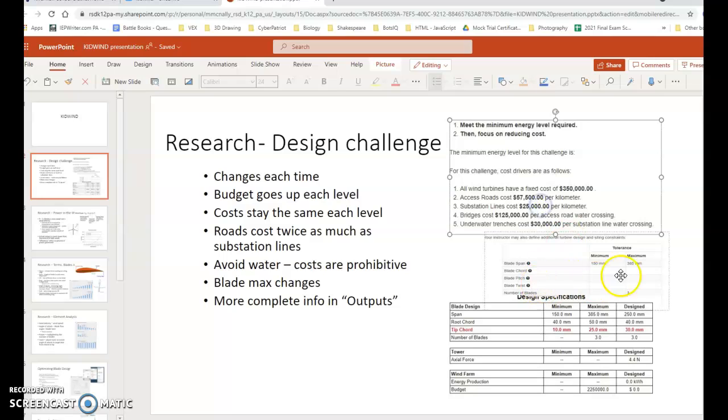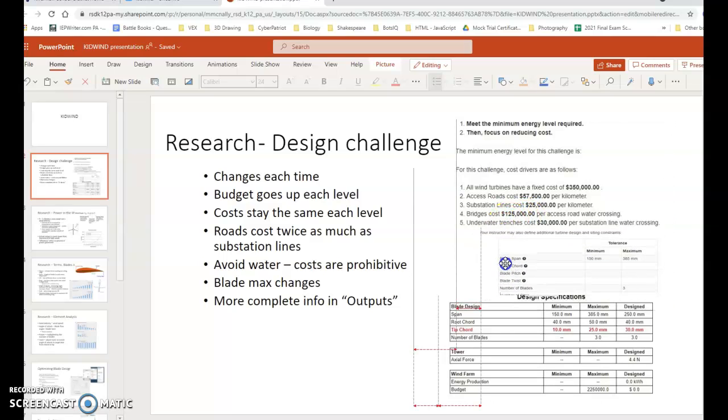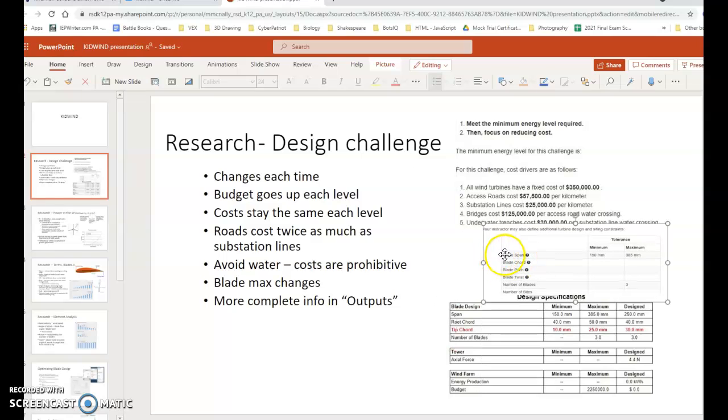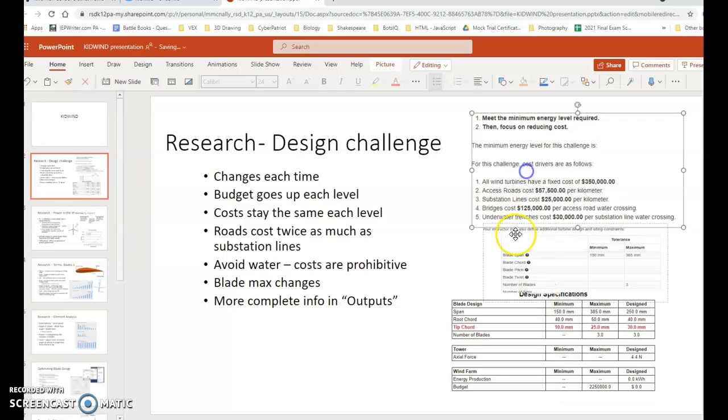Then talk about your pictures. So this is an example over here, this is level two. So it costs $350,000 to make a windmill. You can see access roads are more than twice as much as a substation line. Bridges and underwater trenches, really expensive. Here is what you see in that research location when you first start out. But later on in the outputs, you can open up this PDF and it gives you more complete set of restrictions, what you're actually allowed to do. So you talk about your pictures.